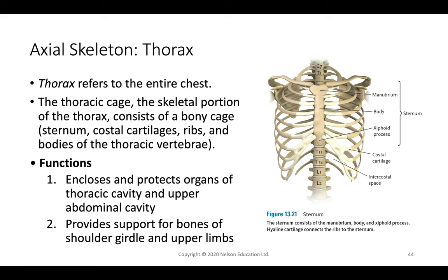The thoracic region forms a bony cage encasing the inner organs, including the sternum — comprised of the manubrium, body, and xiphoid process. The ribs are bones but connect to the sternum via cartilage, allowing flexibility for breathing. The thorax protects the heart, lungs, stomach, and kidneys, and also provides support for the shoulder girdle via the clavicle, which articulates with the humerus and scapula.